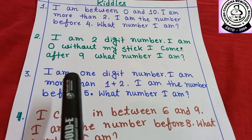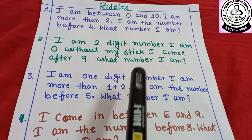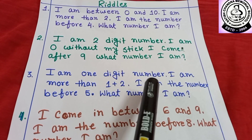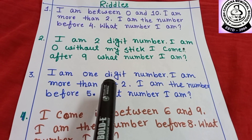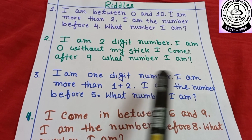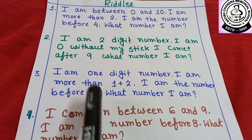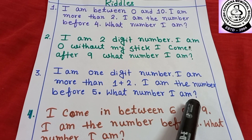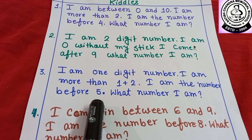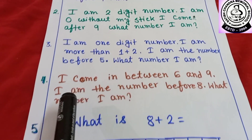Number 3. I am a 1-digit number. You know very well, from 0 to 9 are 1-digit numbers. And I am more than 1 plus 2. You have to add 1 and 2. I am the number before 5. So, what number am I? What comes before 5? Yes! You are right! 4. So, the answer is 4.